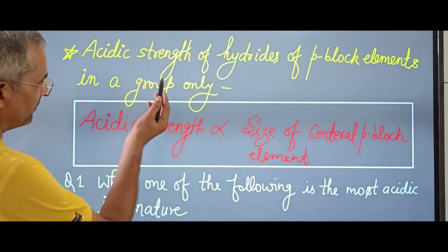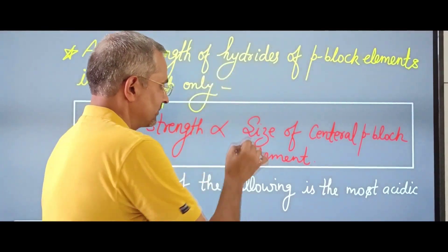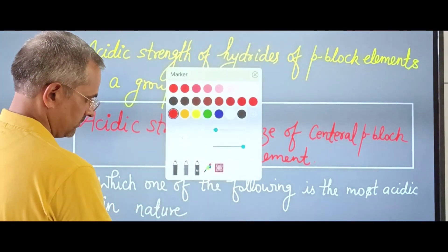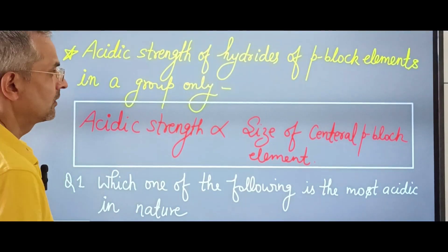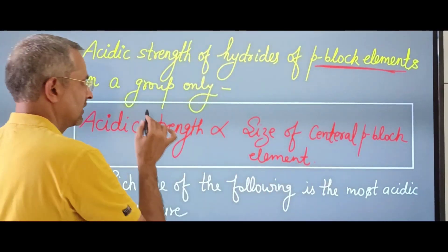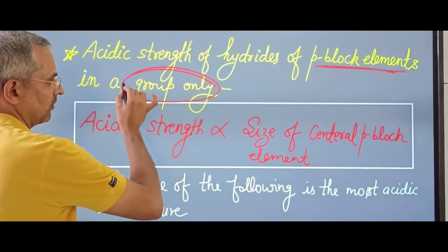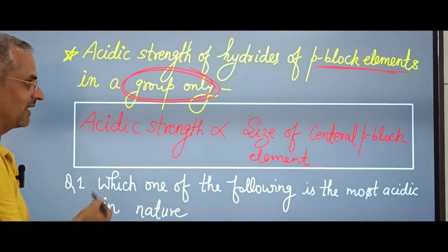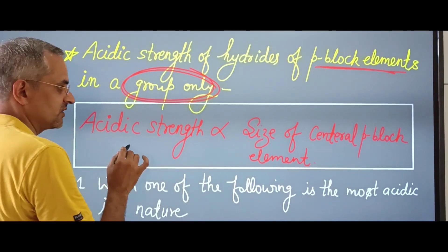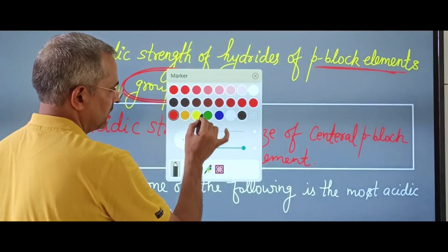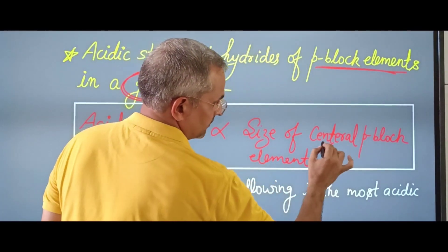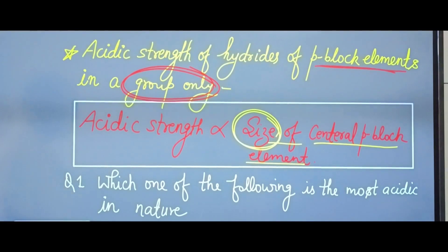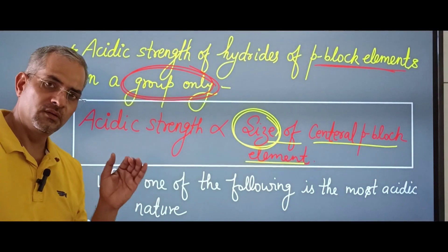The second major topic is the acidic strength of hydrides of P-block elements. The condition here is that we are comparing within the same group only. When acidic strength is asked within a group, remember: acidic strength is directly proportional to the size of the central P-block element. As size increases, acidic strength increases.